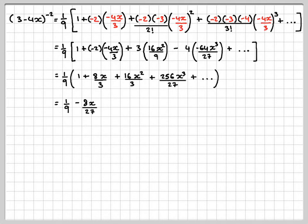Multiplying through by 1/9, we get 1/9 + 8x/27 + 16x²/27 + 256x³/243.